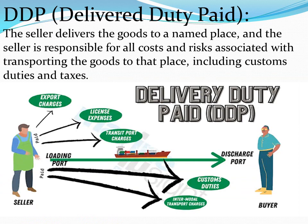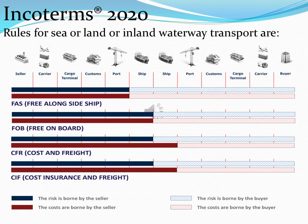DDP or Delivered Duty Paid: The seller delivers the goods to a named place and the seller is responsible for all costs and risks associated with transporting the goods to that place, including customs duties and taxes.